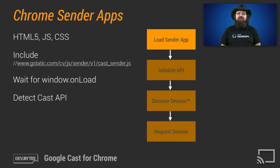Chrome sender applications are constructed using HTML, JavaScript, and CSS. Sender apps can be hosted locally during development and then moved to production servers when publishing. A Google-hosted Cast sender JavaScript resource provides the API that your sender application uses to communicate with the Cast extension, which manages the interaction with Cast receivers.